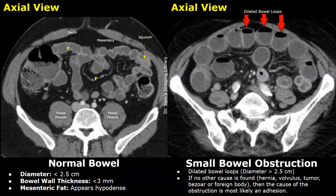We will compare the CT image of normal bowel with small bowel obstruction images. These are axial views. In the image on the left we have a normal small intestine; the level of this image is below the kidneys. The jejunum is seen on the left side and the ileum is seen on the right side near the cecum and ascending colon. Intravenous contrast medium is used which enhances the bowel wall.